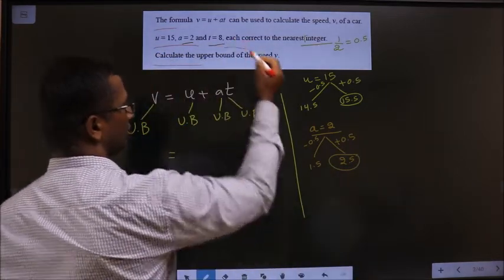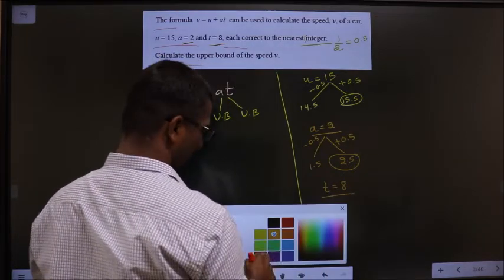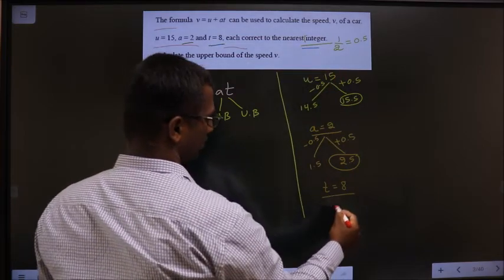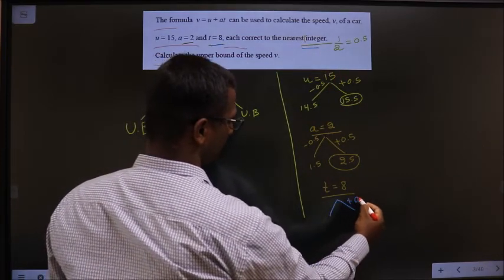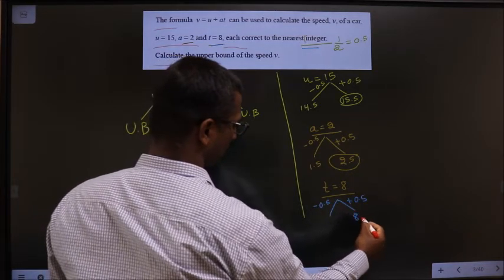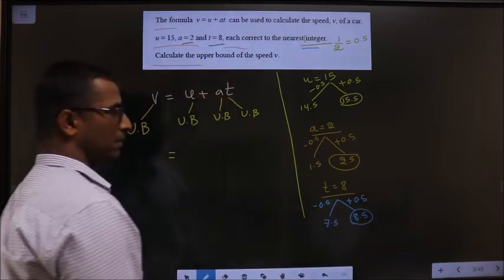Next, T equal to 8. Even this also to the nearest integer. So add 0.5, subtract 0.5. I get 8.5, 7.5. So this is the upper bound.